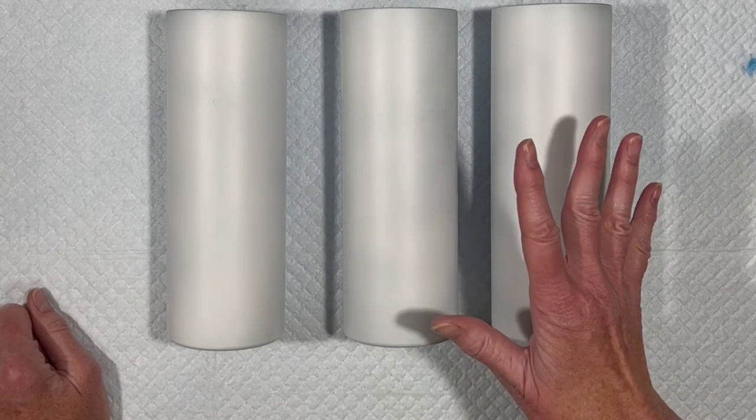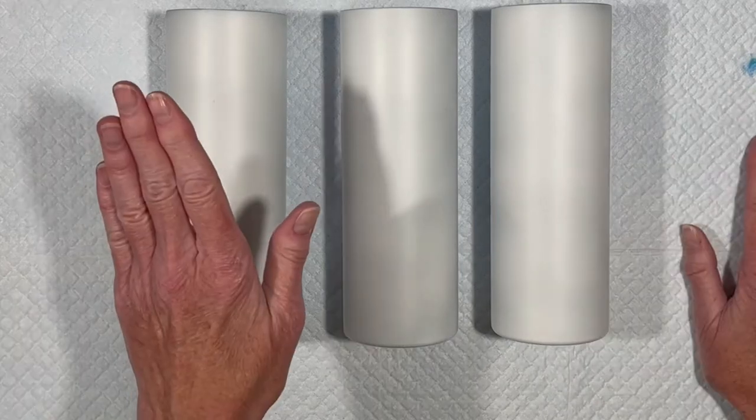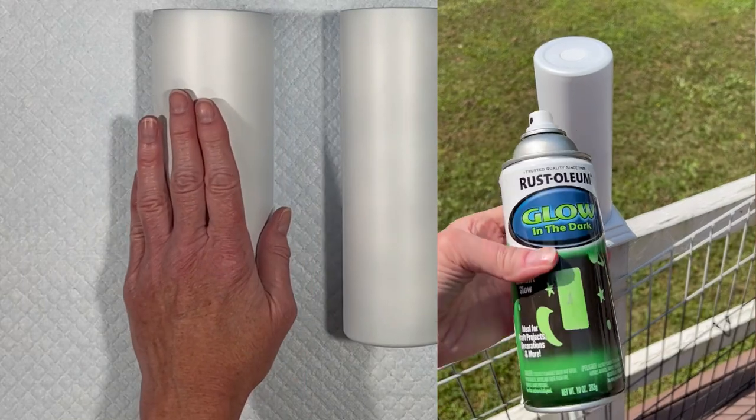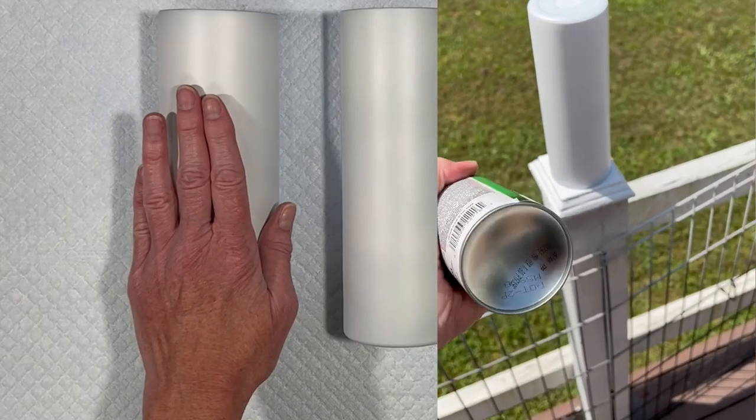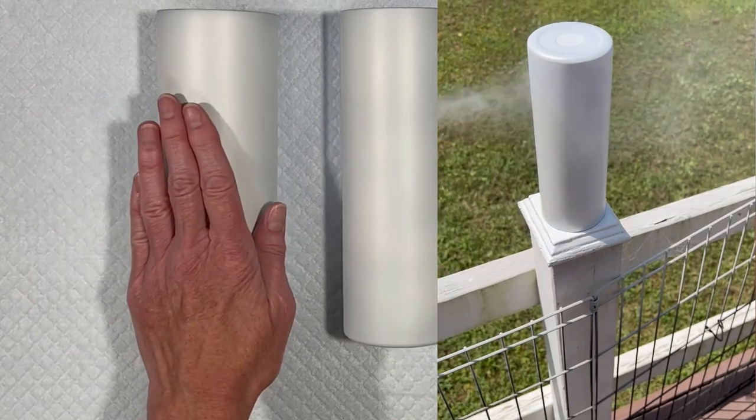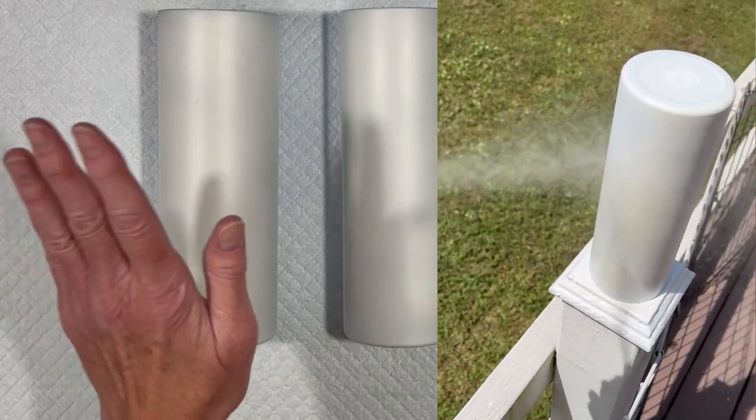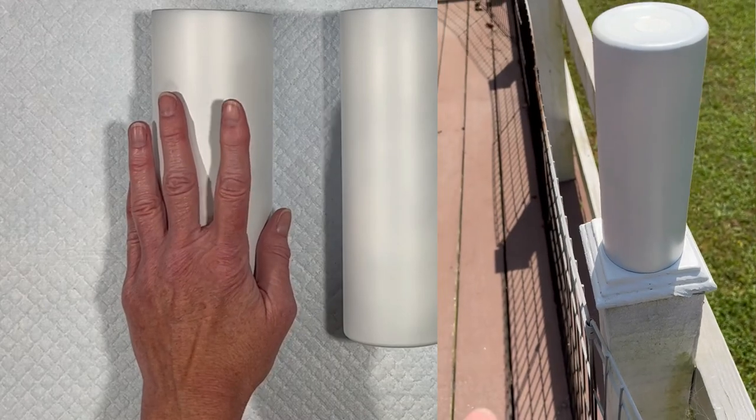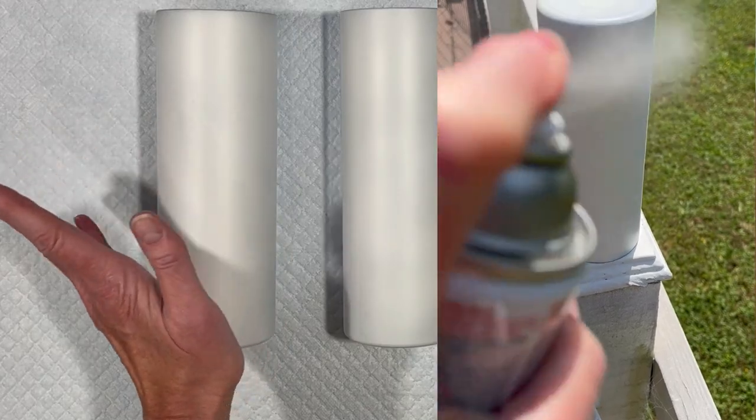I sanded them, washed them, spray painted them with Rust-Oleum 2X matte white paint. I am going to take one of them and spray it with three layers of Rust-Oleum glow-in-the-dark paint. This is the paint I prefer to use. There are other glow-in-the-dark paints available. This particular can I got at Target of all places.